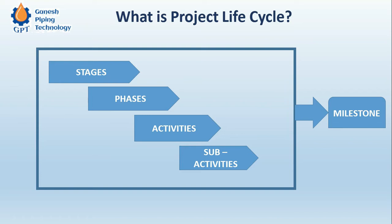Suppose we consider the bridge project to be five years, that gives us 1800 days. In those 1800 days we have to plan all the activities and sub-activities, and at the end of this 1800-day period we expect that the bridge will be commissioned at its desired location. If we are able to execute this project in 1800 days, our work efficiency is 100 percent.